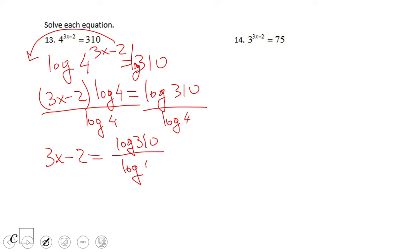So 3x minus 2 equals log of 310 over log of 4. Some people may want to change this quotient of logs into a number, but that is just a number. We're going to add 2 to get rid of this minus 2.